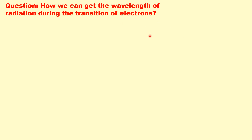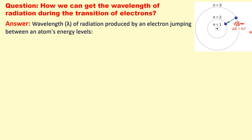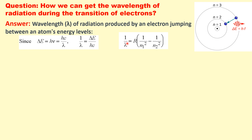How can we get the wavelength of radiation during the transition of electrons? The wavelength λ of radiation produced by an electron jumping between an atom's energy levels is given by the energy difference ΔE = hν = hc/λ, so 1/λ = ΔE/hc. This gives 1/λ = R(1/n₁² − 1/n₂²), where R is the Rydberg constant with a value of 1.0973 × 10⁷ per meter.